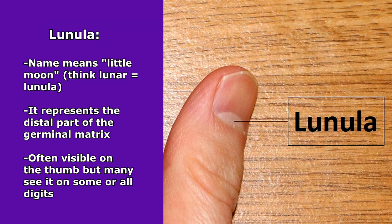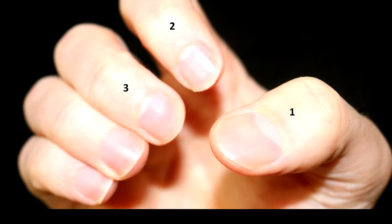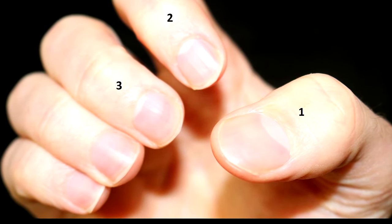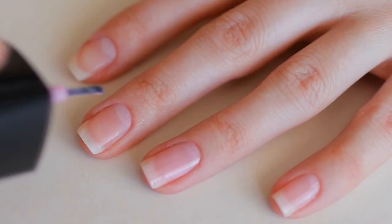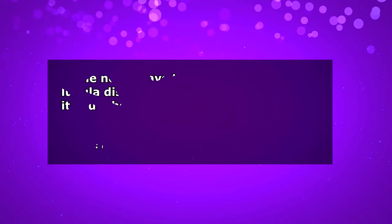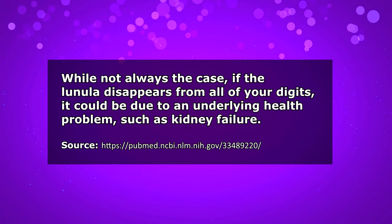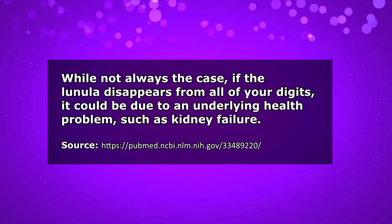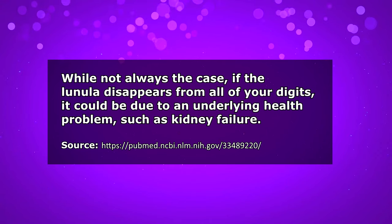The lunula's name means 'little moon,' and it is the distal end of the nail matrix, which is not translucent like the nail's body, so it has a different color. The lunula tends to be most visible on your thumb; on other digits you may not really see it. On my hand, you can only see it on digits one through three, but some people can see it on all five digits. If the lunula begins to disappear from all your fingers, it could potentially be due to an underlying disease or something like kidney failure.